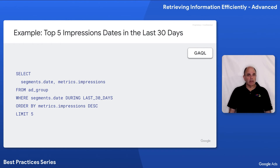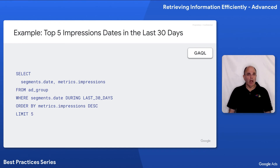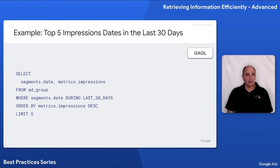The first notable difference is that there are implicit joins. Here we are selecting segments.date and metrics.impressions as if they are from two different tables. The GAQL language already has deep knowledge of the object hierarchy and has already made the joins across all relevant tables for a given resource. In this case, we are selecting from the ad group resource to find dates and impressions, limiting to the last 30 days, ordering by impressions descending, and taking only the top five.